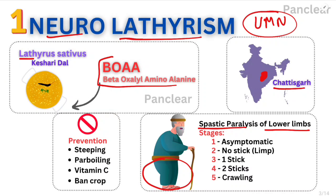There are some stages. Stage one is the asymptomatic stage. Stage two: you have spastic paralysis but you are walking with a limp. Stage three: he requires one stick — that is the one-stick stage. Stage four: he requires two sticks — the two-sticks stage. In the fifth and final stage, he will just be crawling — that is the crawling stage.